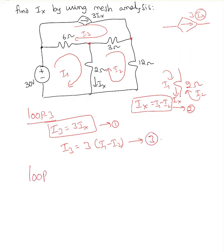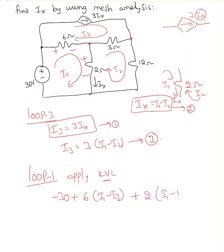Now, loop 1 — do we need to apply KVL? Yes. Apply KVL to loop 1. Before applying KVL, assign positive and negative signs according to the current direction. The voltage source polarity is already given. According to my current direction: minus 30 plus 6 times (I1 minus I3) plus 2 times (I1 minus I2) equals 0. Simplifying: 8I1 minus 2I2 minus 6I3 equals 30. This is the fourth equation.